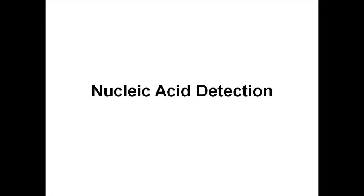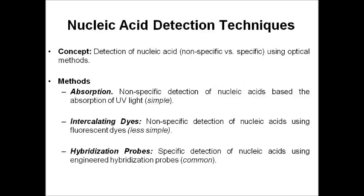Now that DNA is amplified, how do we detect it? Nucleic acid detection asks: how do we find a piece of DNA of interest using nonspecific or specific methods? You don't want to confuse RNA for DNA or human DNA for bacterial DNA. There are three main methods: absorption, intercalating dyes, and hybridization probes.